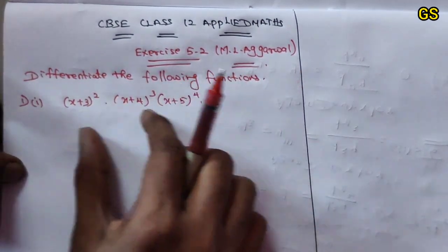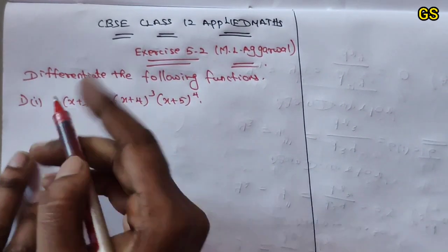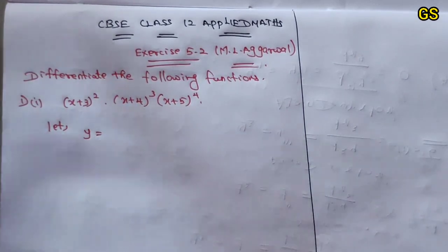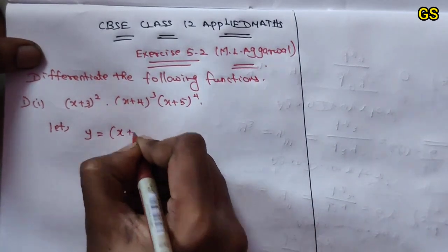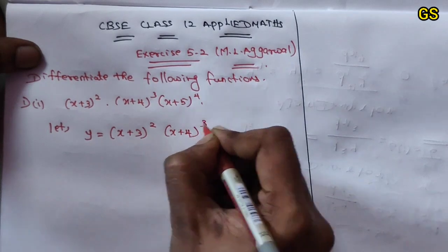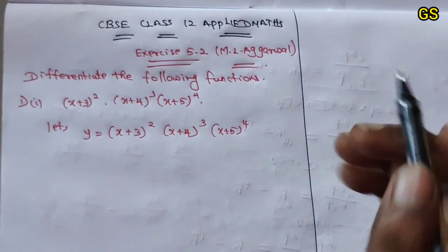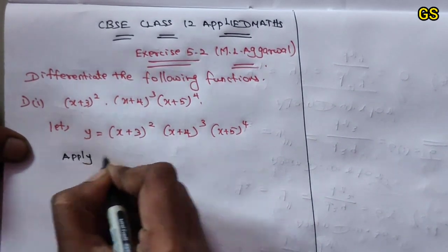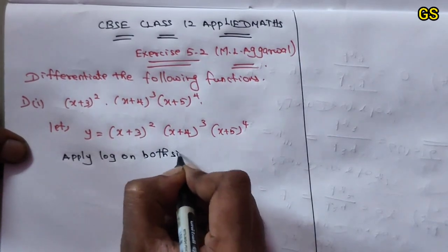You will see the various functions. We will use the logarithm idea. The function is: y equals (x plus 3) whole square, into (x plus 4) whole cube, into (x plus 5) whole power 4. Now apply log on both sides.